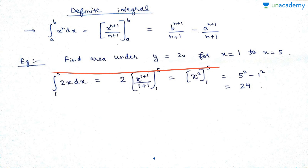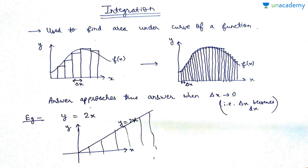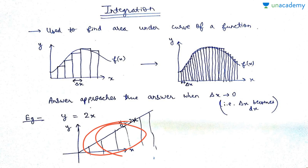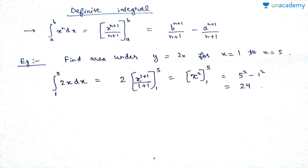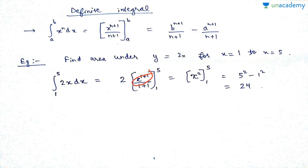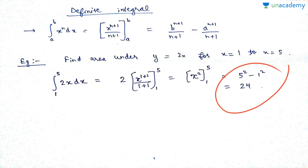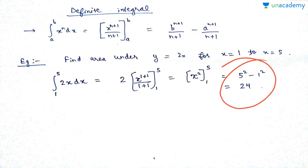If you want to find the area under y = 2x from x=1 to x=5, the result will be a plain number with no variable. Apply the formula: integrate 2x dx to get x^2 (the 2 cancels). Evaluate x^2 from 1 to 5: substitute 5 to get 25, minus substituting 1 to get 1, so the answer is 24. You can verify this manually.